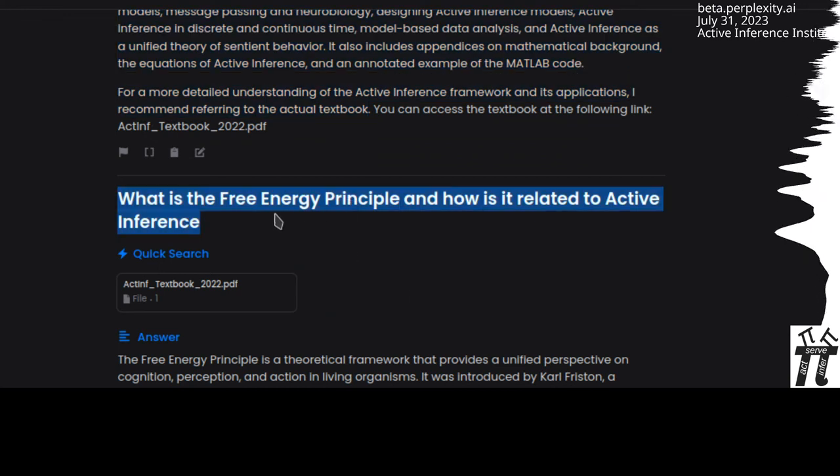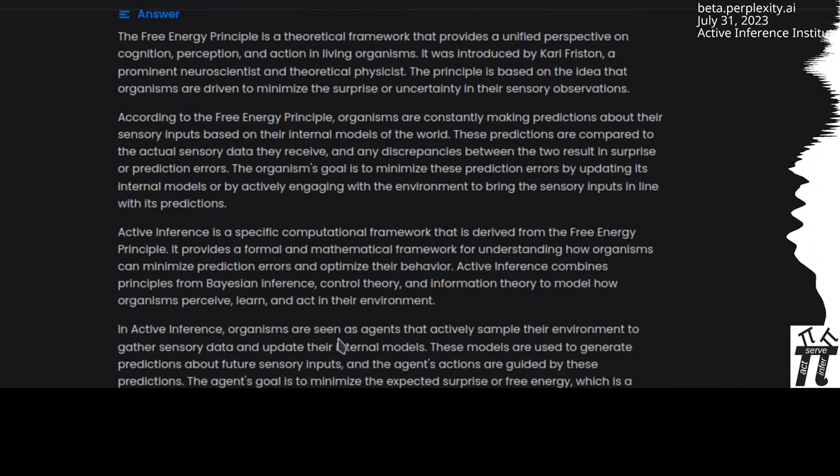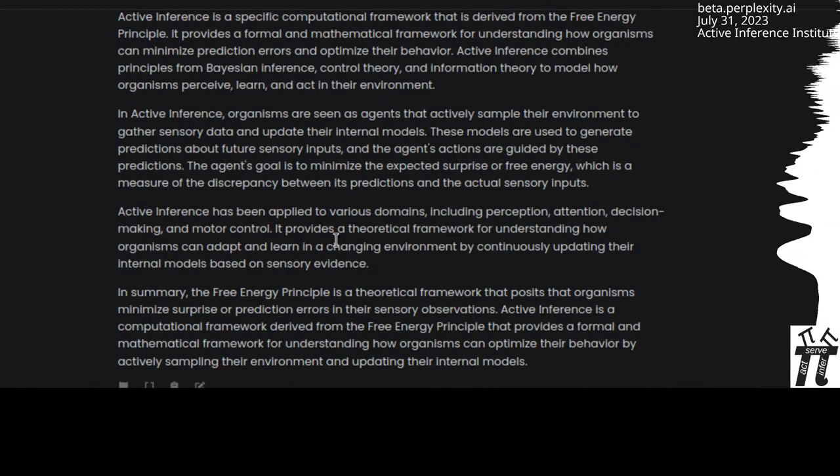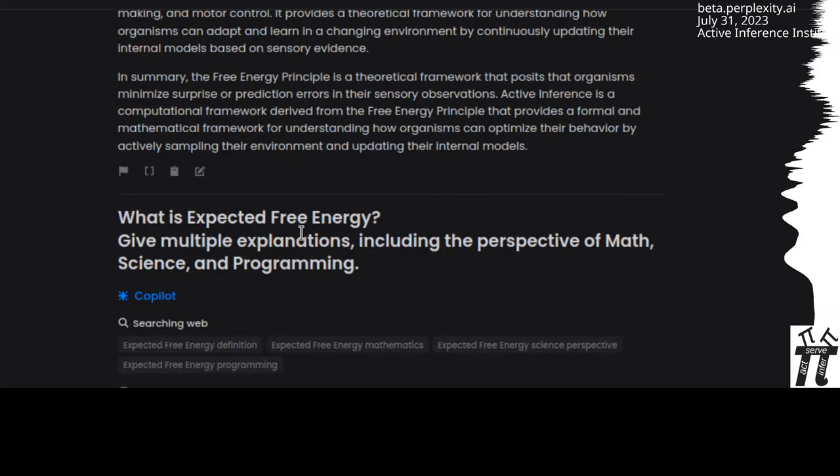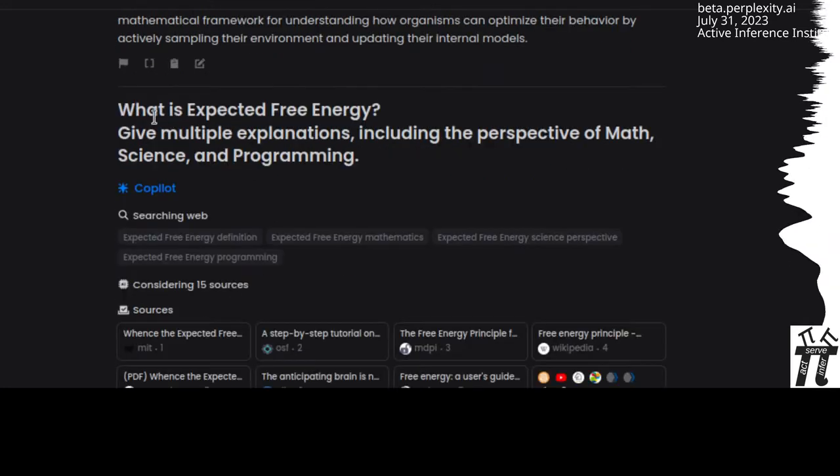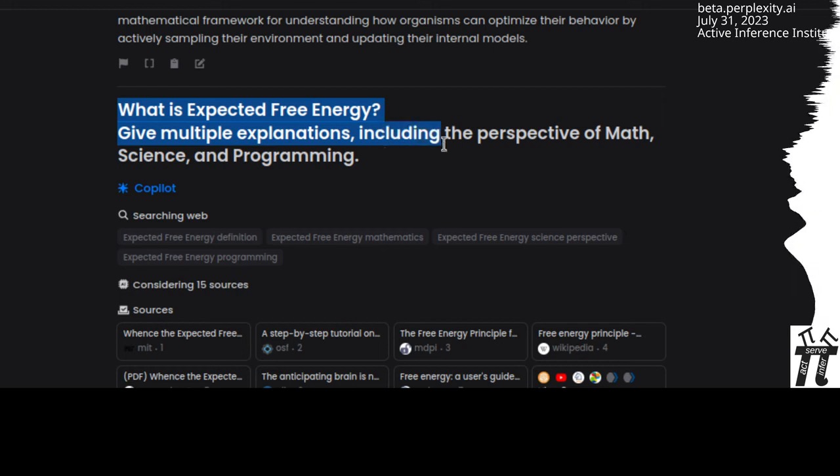It didn't want to immediately go for it, but gave some summary. I was looking for something a lot deeper than just an overall summary of the book. So I asked, what is the free energy principle and how is it related to Active Inference? Then I asked what is expected free energy? Give multiple explanations, including the perspective of math, science, and programming.